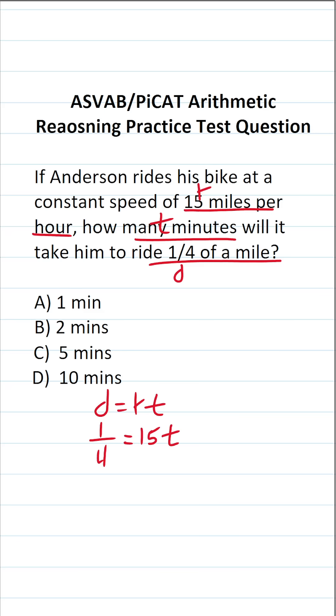And all we have to do is solve for t. Now, the first thing I want to point out is this: we're given his rate in terms of miles per hour. That is, he rides his bike at 15 miles per hour. But we want to know how many minutes it's going to take him to cover a quarter of a mile. So we have a little bit of a conversion problem.